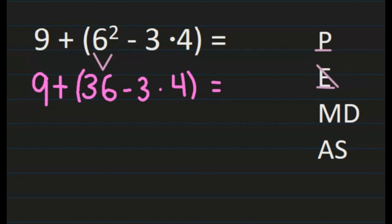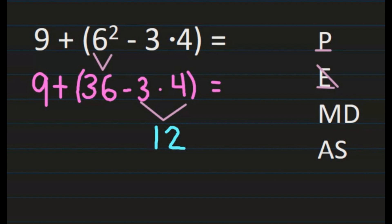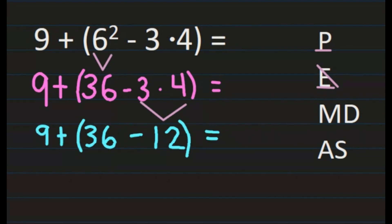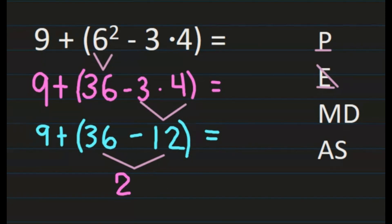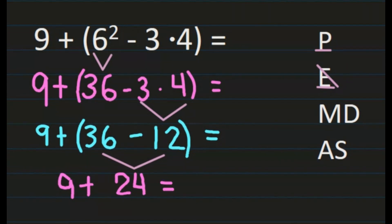Still working inside the grouping symbols, I don't have any more exponents, so I'm looking at multiplication and division inside the parentheses. I see 3 times 4, which is 12. Writing in the rest of the problem, noticing we are subtracting the 12. We have no more multiplication and division inside the parentheses. The last step inside is 36 minus 12, which is 24. Bringing the rest of the problem down, the final step is 9 plus 24, which equals 33.